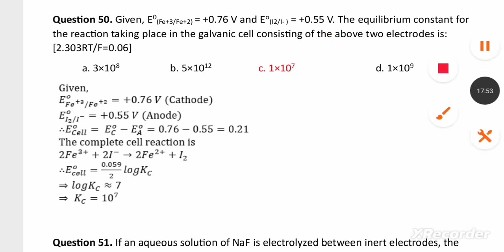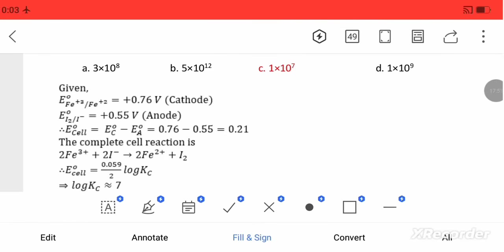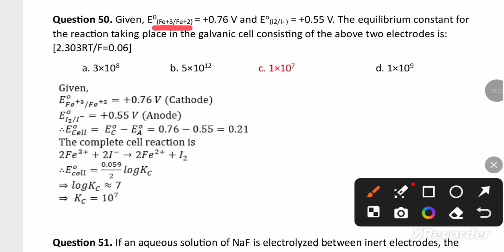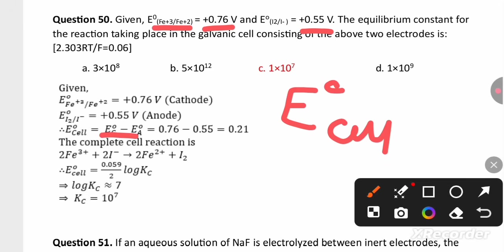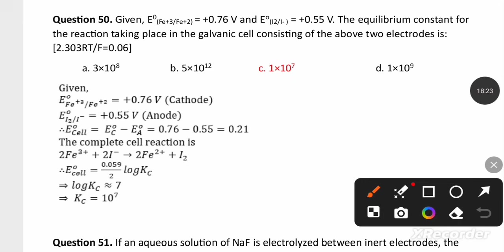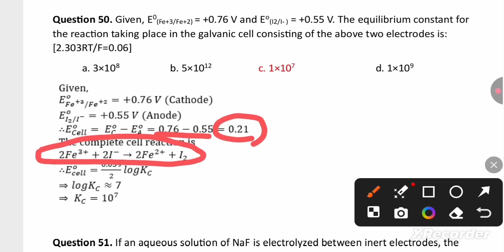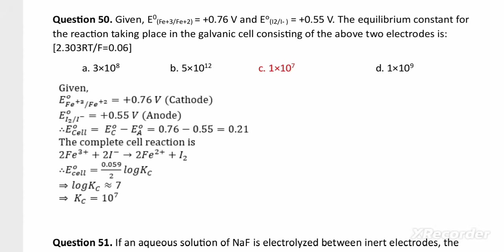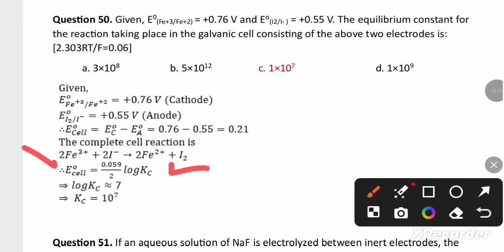An electrochemistry numerical: E° of Fe is 0.76 V and E° of I2 is 0.55 V. Finding E°cell = E°cathode − E°anode: cathode is iron and anode is iodine, giving E°cell = 0.21 V. Writing the redox reaction shows n = 2 electrons transferred (Fe3+ + 2e− → Fe2+). Using the formula E°cell = (0.0591/n) × log Kc, substituting n = 2 and E°cell = 0.21, we calculate log Kc = 7, giving Kc = 1 × 10^7.